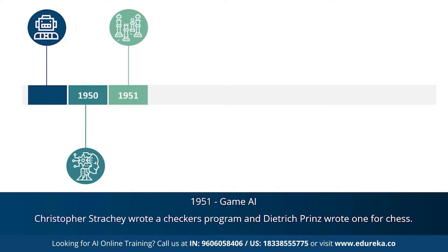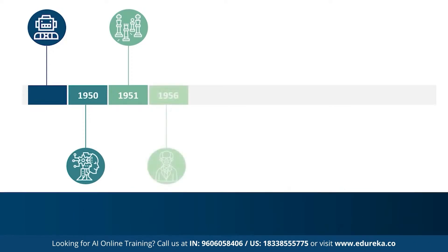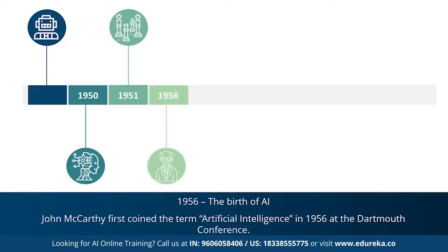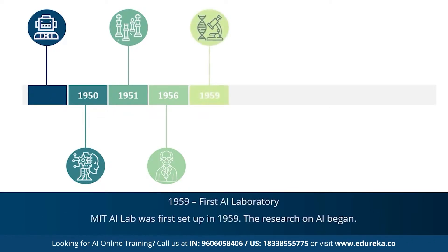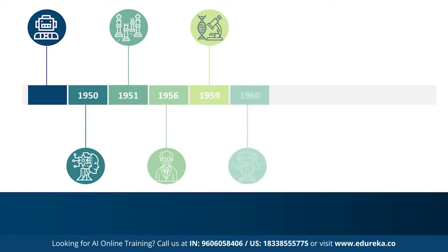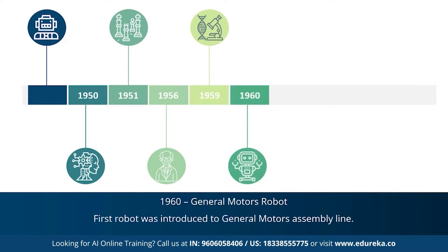However, those programs were later rewritten and redone in a better way. 1956 marked the most important year for artificial intelligence — during this year, John McCarthy first coined the term artificial intelligence. This was followed by the first AI laboratory, the MIT AI lab, set up in 1959, dedicated to the research of AI. In 1960, the first robot was introduced to the General Motors assembly line.